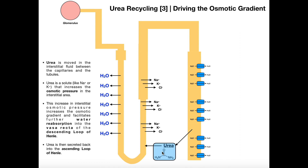Urea will be dumped from the collecting duct into the interstitial area, driving even more water reabsorption. But this urea doesn't just stay there — it'll actually be secreted back into the ascending limb of the loop of Henle, then go back up through the distal convoluted tubule, back to the collecting ducts, and then cycle through many, many times. That serves to drive further water reabsorption. A lot of this urea is actually excreted into the urine — only some fraction of it gets moved into the interstitial region — but it's just enough to increase the osmotic pressure there and further drive water reabsorption. So some of it is excreted, and some of it is recycled in this fashion.